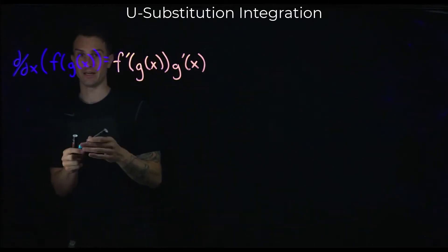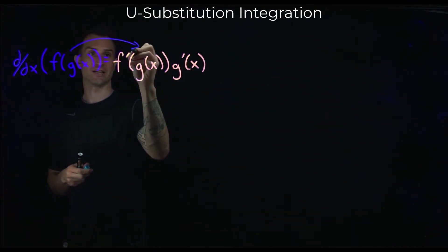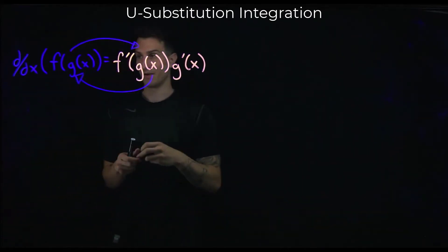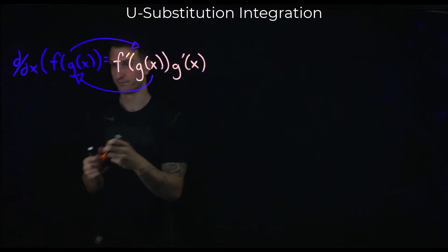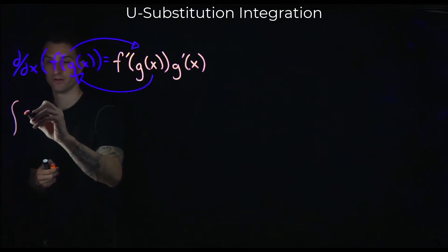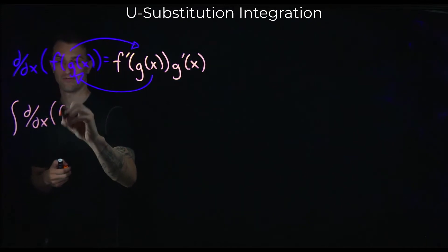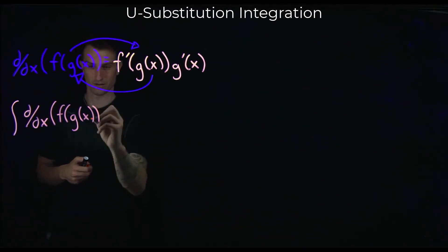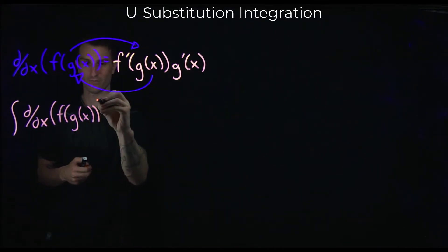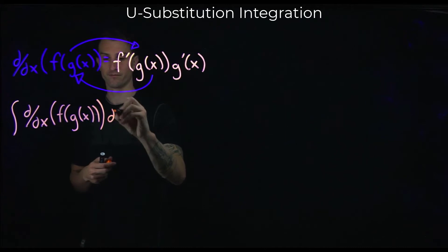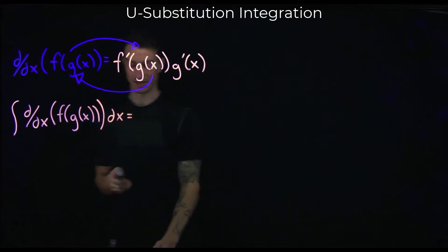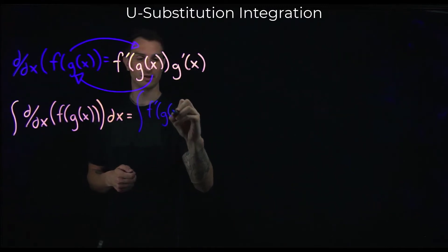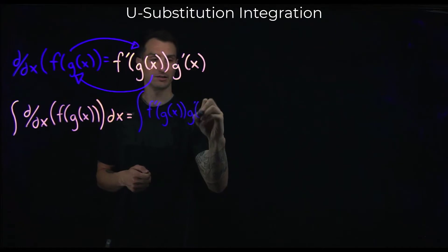So now what happens if I want to go backwards? What's happening here is I'm going in this direction, taking the derivative. So how do I go backwards? If I take the integral of both sides — the integral of f prime of g of x, g prime of x dx.